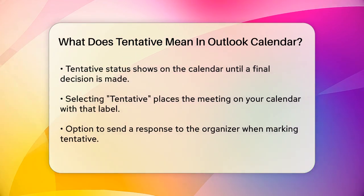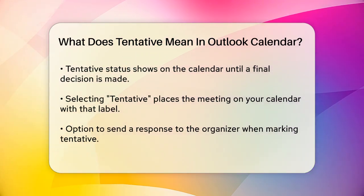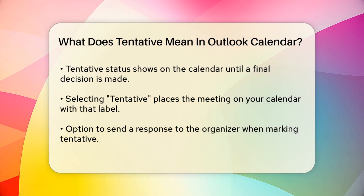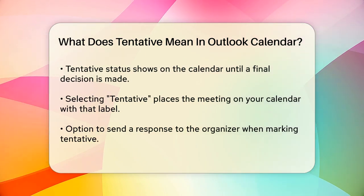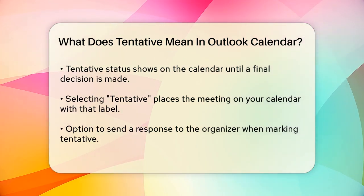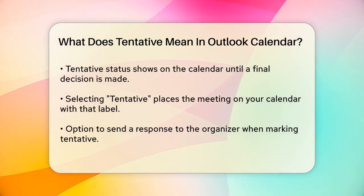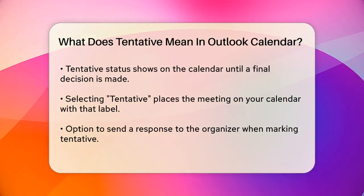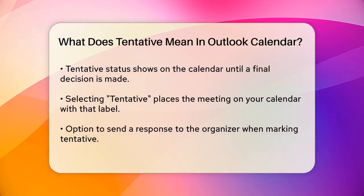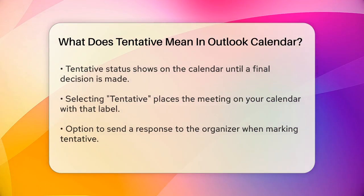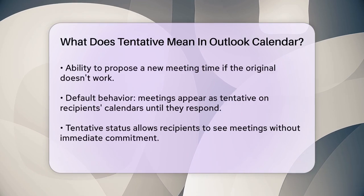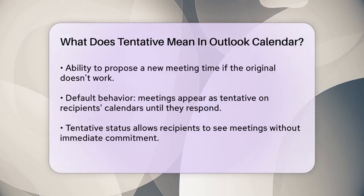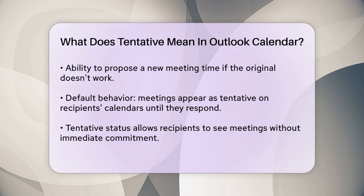Here's how it works in practice. When you open the meeting invitation, you can select Tentative from the response options. This will put the meeting on your calendar with a tentative status, and you can also choose to send a response to the organizer with your tentative acceptance. You can even propose a new time if the current time doesn't work for you.